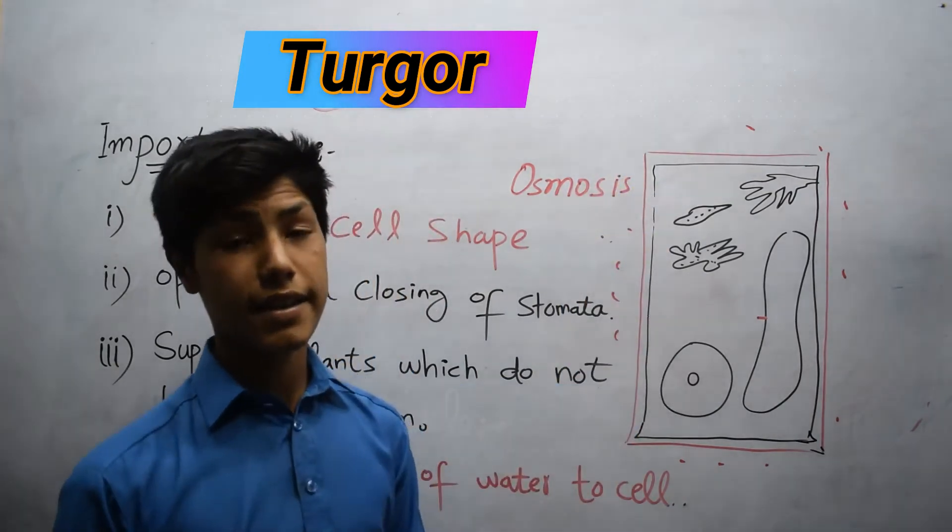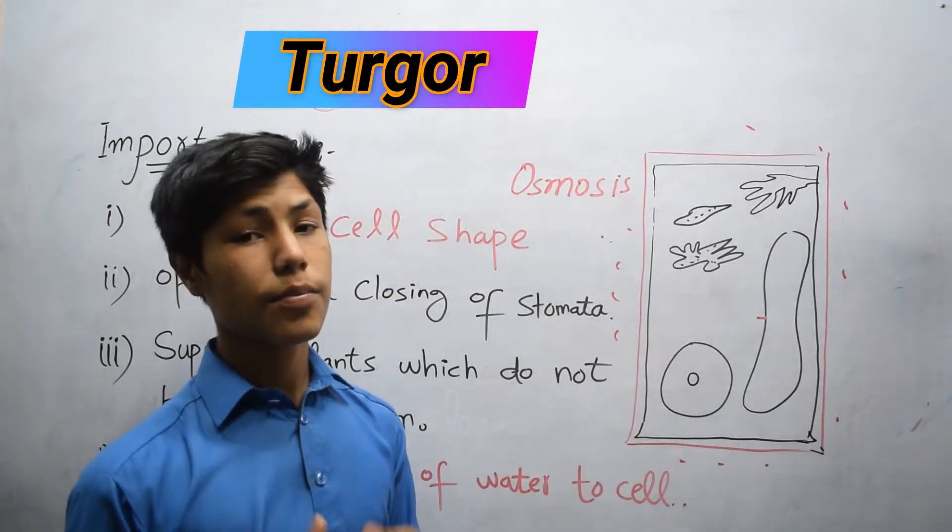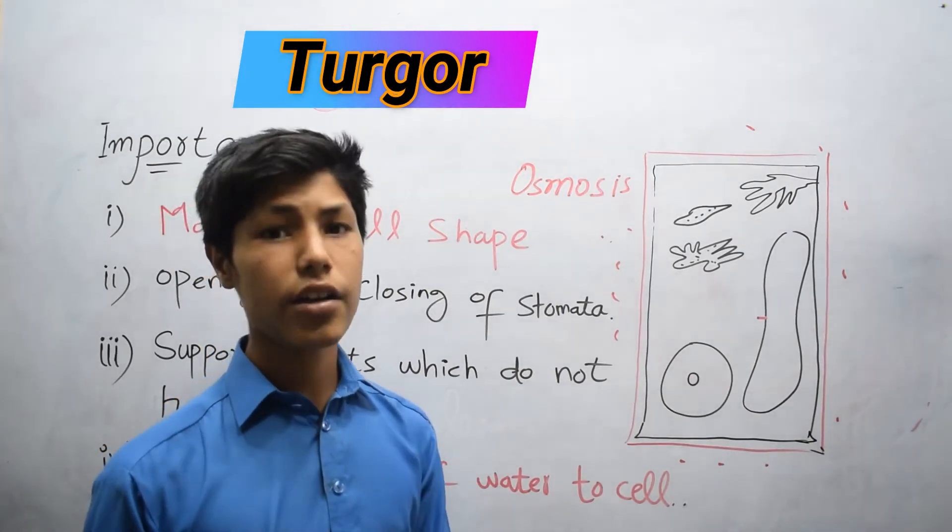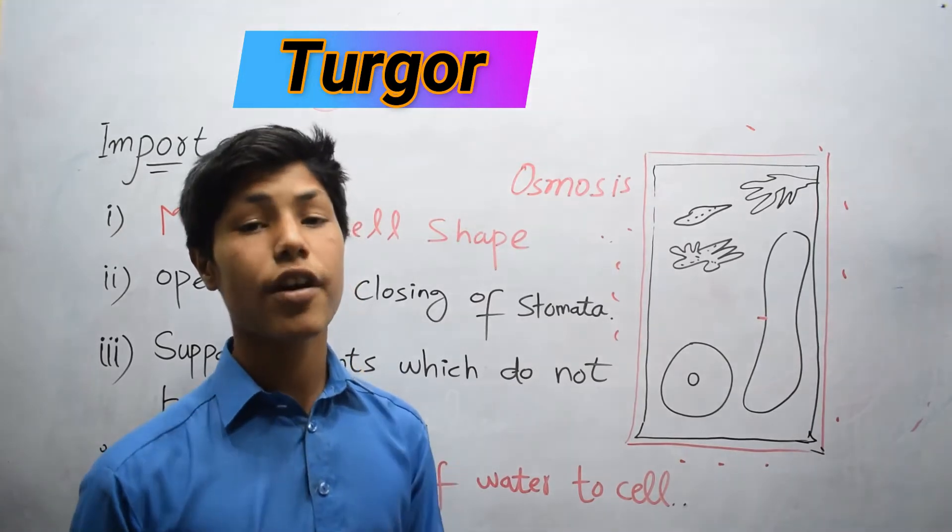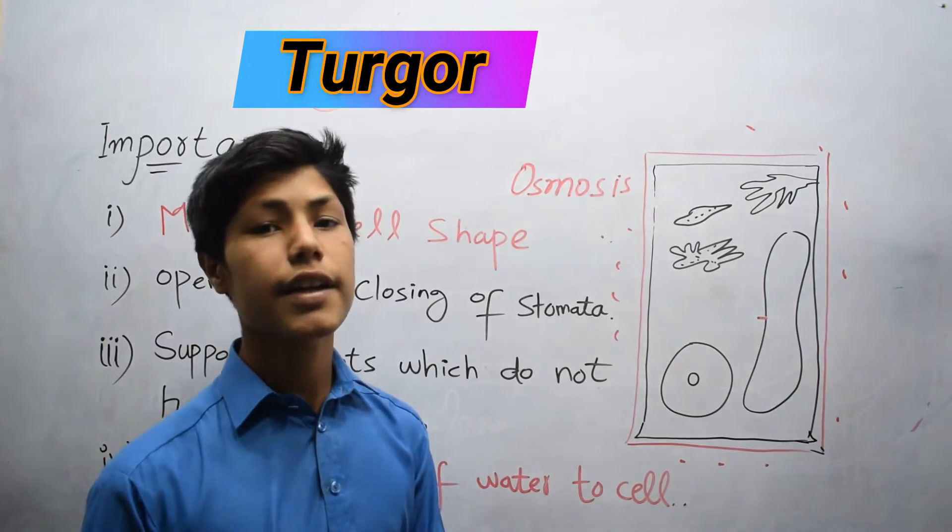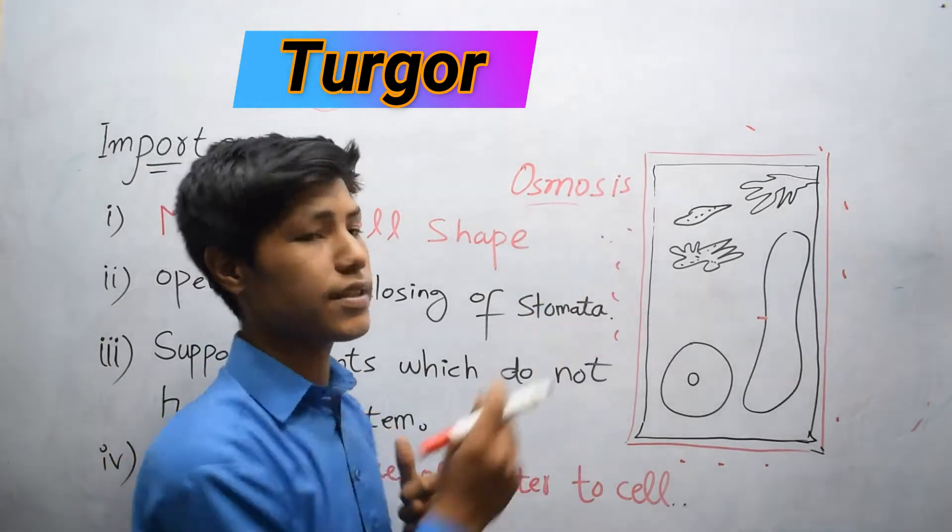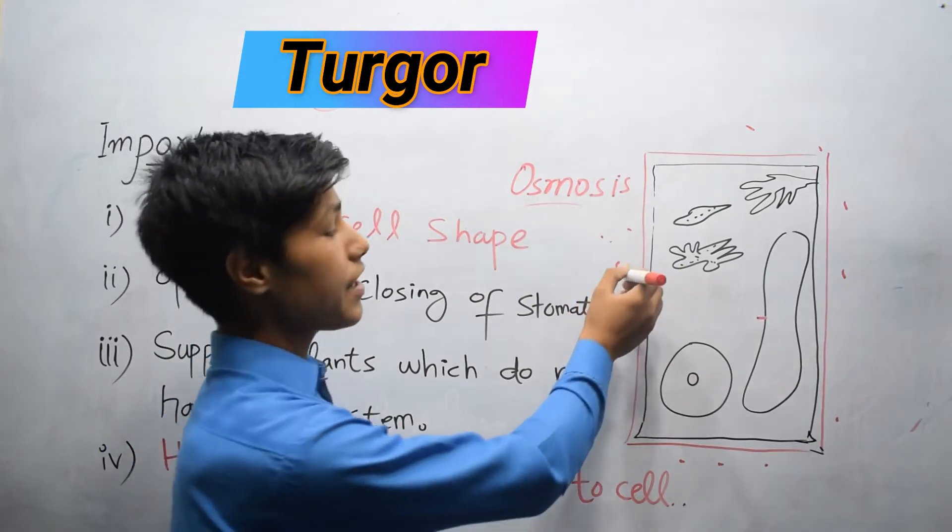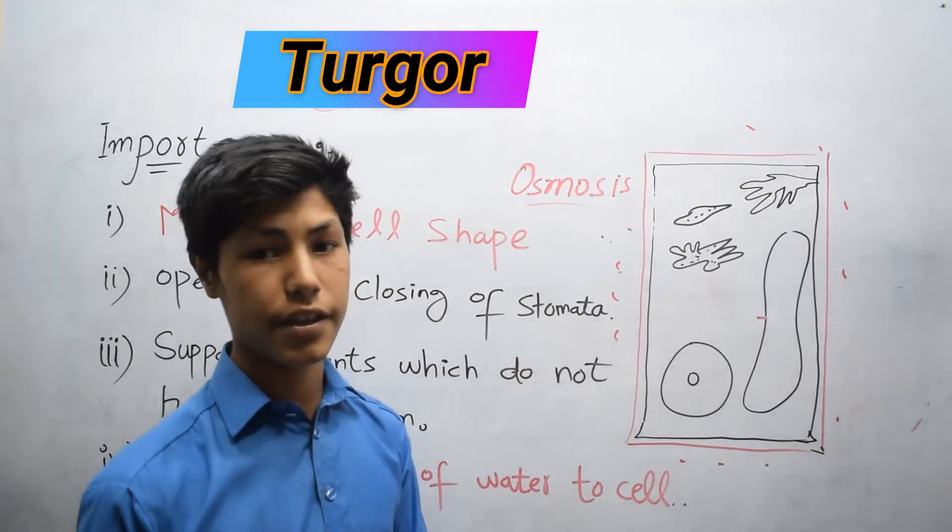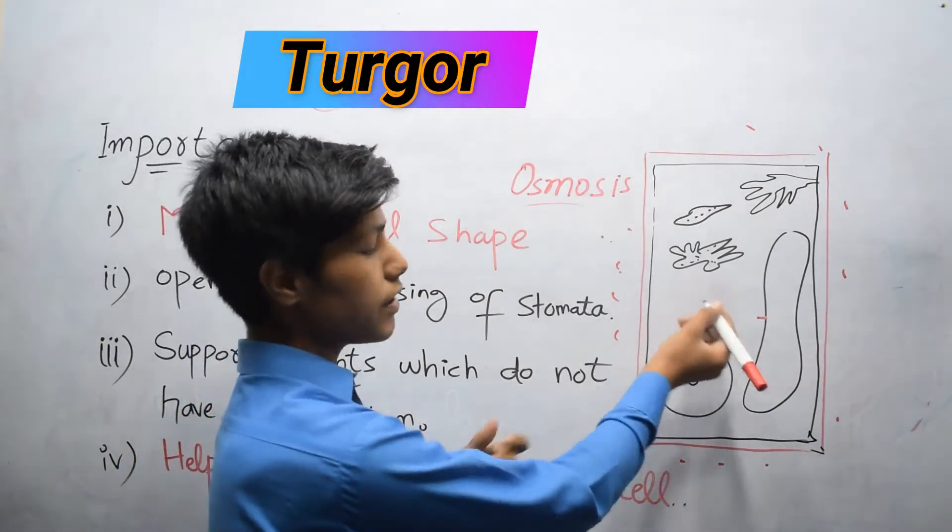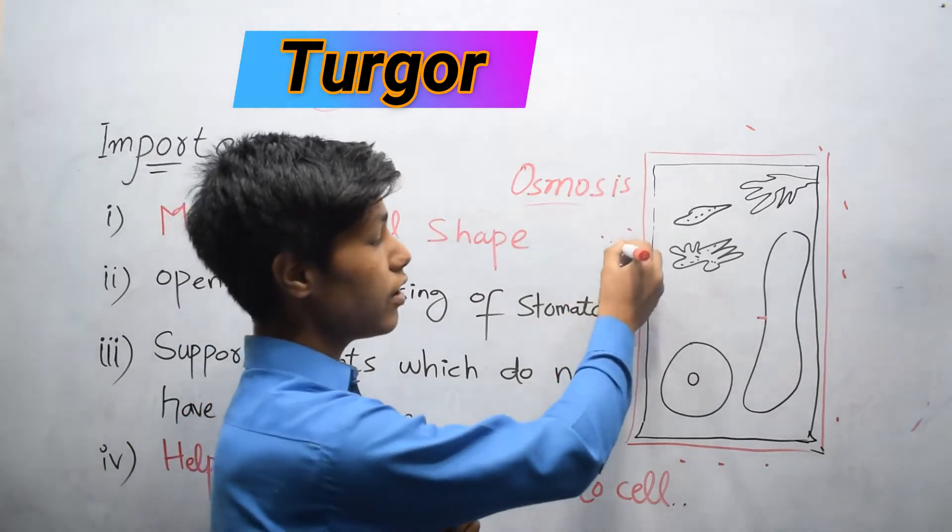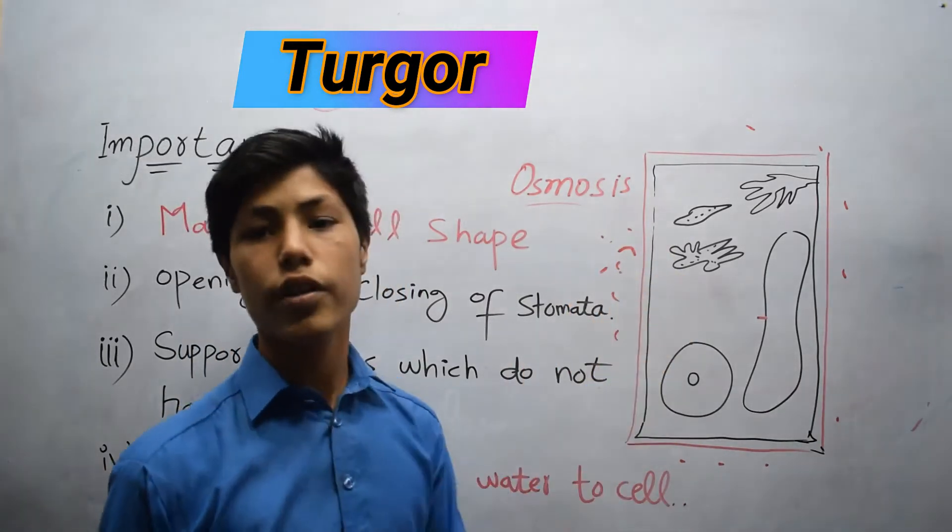Now what is osmosis? The process in which the movement of molecules from the region of higher concentration to region of lower concentration through semipermeable membrane is called osmosis. In environment there is high amount of water present, while in cell there is low amount of water present. So it moves from higher concentration to lower concentration.